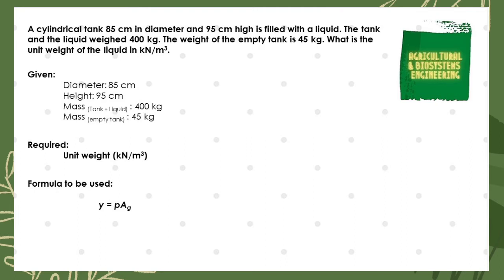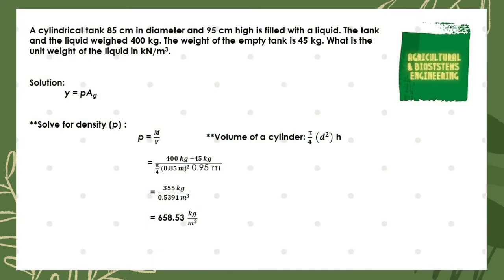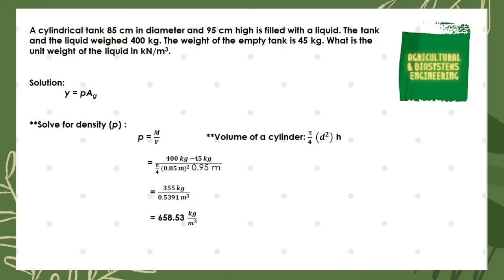Let us now proceed to our solution. First, we need to solve for the value of our density. To solve for that, we will be using the formula density equals mass divided by volume. The formula to solve for the volume of a cylinder is π/4 multiplied by the square of the diameter multiplied by the height.